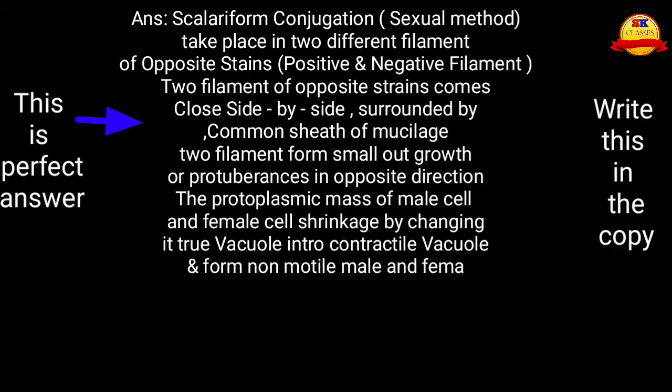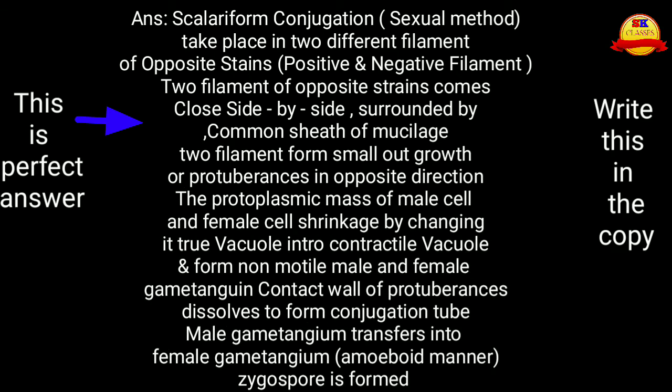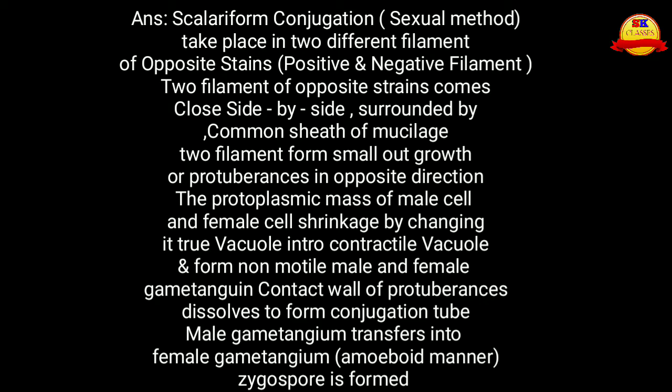Scalariform conjugation is a sexual way of reproduction in Spirogyra that takes place in two different filaments of opposite strain — one of positive strain and another of negative strain. These two filaments of opposite strains come together side by side, surrounded by a common sheet of mucilage.